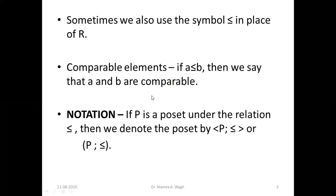Comparable elements: when do we say that two elements are comparable? If a ≤ b — that means a and b are related — then we say that a and b are comparable. The notation ≤ can also be called R or rho; it is just a notation. If P is a poset under the relation ≤, then we denote the poset by the symbol (P, ≤).